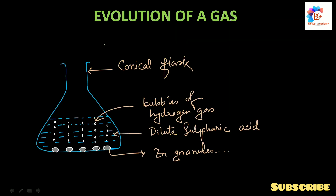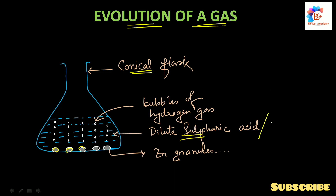In chemical reactions, the first characteristic is evolution of a gas. If we take a conical flask and add some dilute sulfuric acid and dilute hydrochloric acid, then we will see that hydrogen gas will produce bubbles.